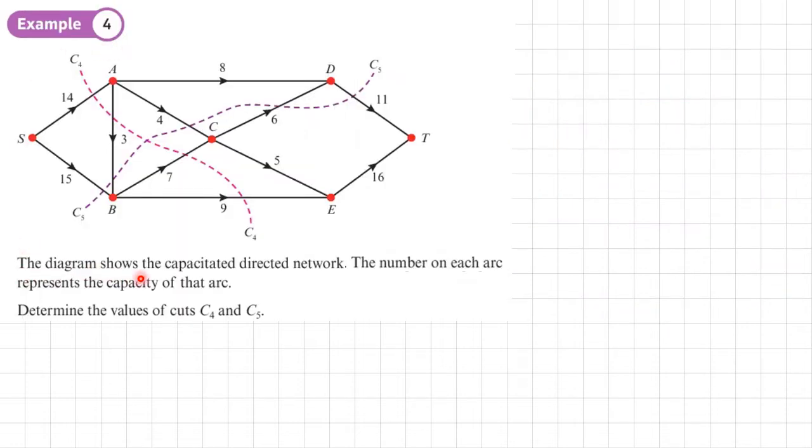Example 4, the diagram shows the capacitated directed network, the number on each arc represents the capacity of the arc, determine the value of the cuts C4 and C5.